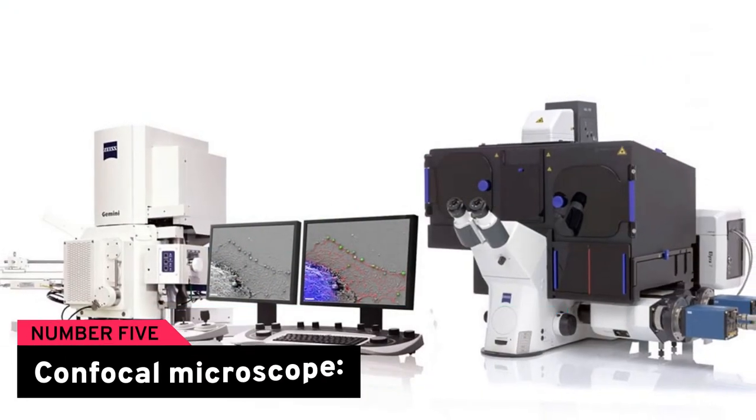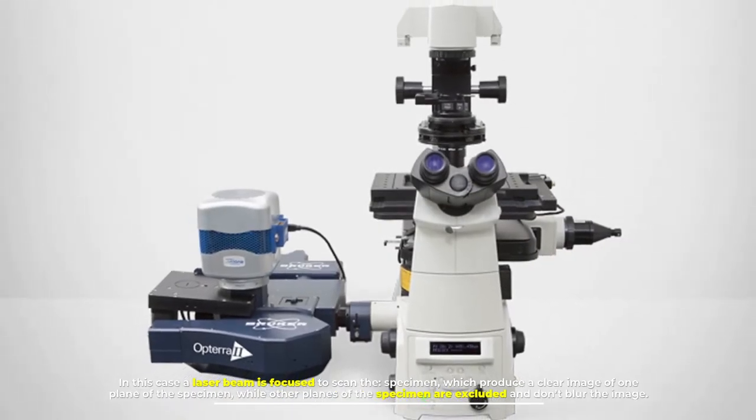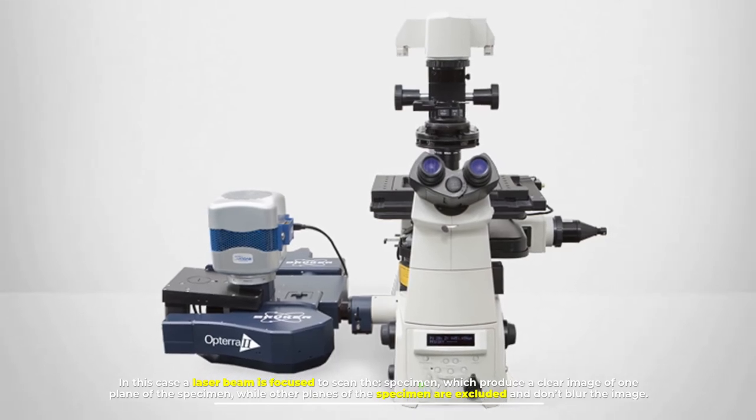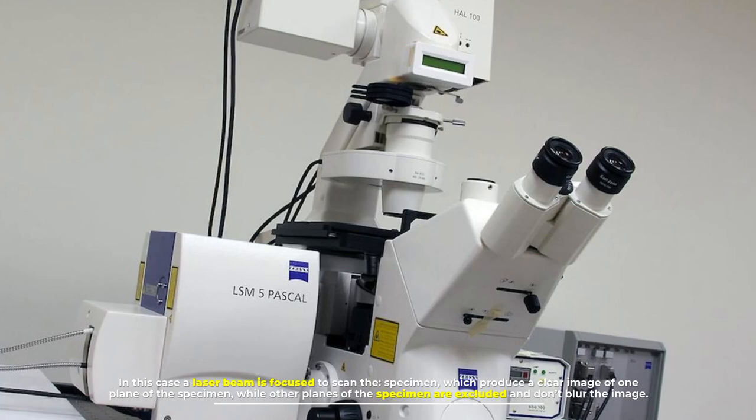Number five: confocal microscope. In this case, a laser beam is focused to scan the specimen which produces a clear image of one plane of the specimen while other planes of the specimen are excluded and don't blur the image.